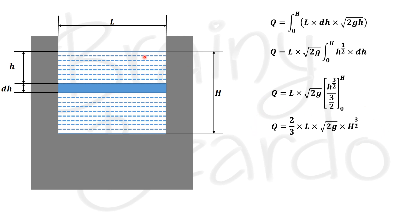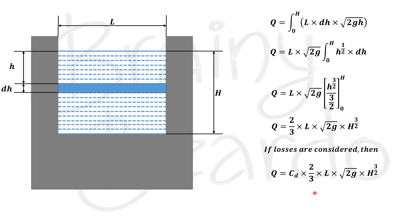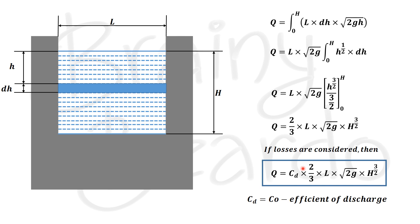This would be the equation for discharge through the notch, but since we have not considered losses in this derivation, if we account for losses the equation becomes Q equals Cd into 2/3 into L into root of 2g into H to the power of 3/2, where Cd is called the coefficient of discharge. This equation is the discharge formula for a rectangular notch. I hope you understood this derivation — if you like the video, please subscribe to my channel and share it with your friends.